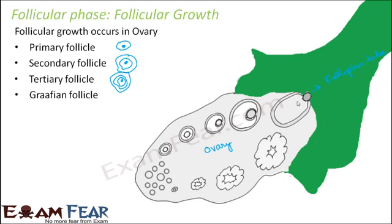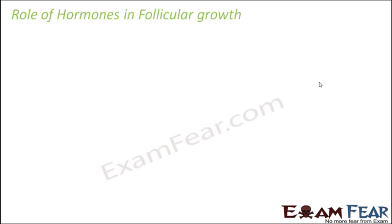The entire process of egg formation — starting from the primary follicle, then secondary, then tertiary, and finally the Graafian follicle — keeps happening every month. When this process happens, an egg is released, and only when an egg is released does the uterus start preparing itself. The uterus prepares itself by thickening of the endometrium. So we will now see what helps the uterus thicken its endometrium.